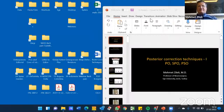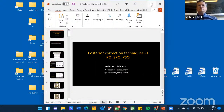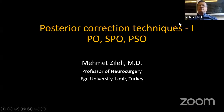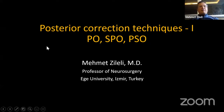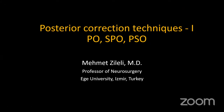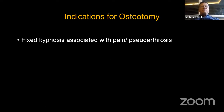Thanks a lot for the nice invitation. First of all, before starting, I wish a quick peace at the Ukrainian region and I wish all the best for our colleagues living in Ukraine. Now I will talk about posterior correction techniques — the most common used ones. The main indication of osteotomy is a fixed kyphosis associated with or without pain or pseudarthrosis. If it's a flexible kyphosis, we can make some reduction without an osteotomy.